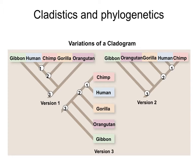We want to group organisms by their common evolutionary descent. We want to group the most closely related groups together, and that's what we use cladistics and phylogenetics for. Those are the systems that help us decipher the evolutionary history of a species so we can see their connections and how they are genetically related to one another.